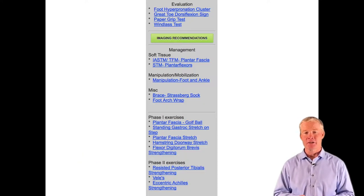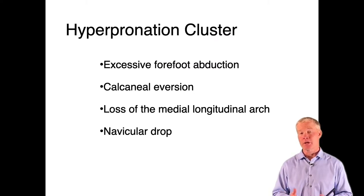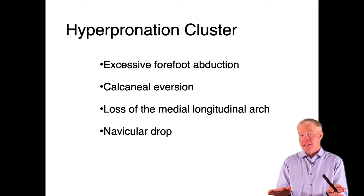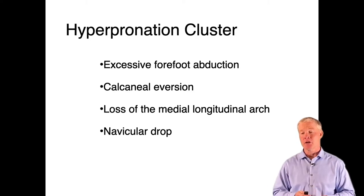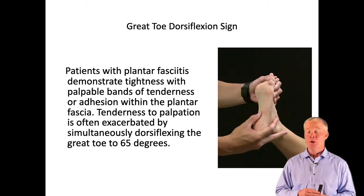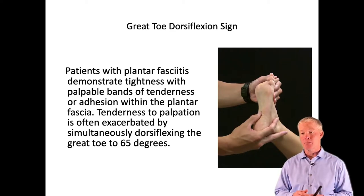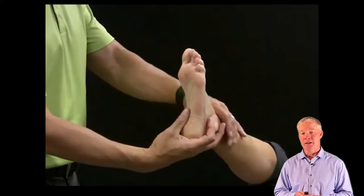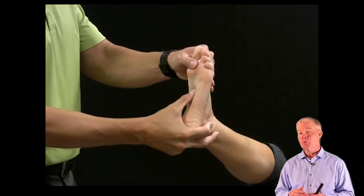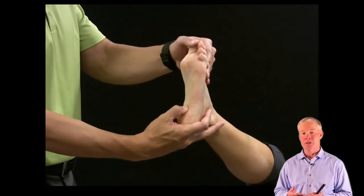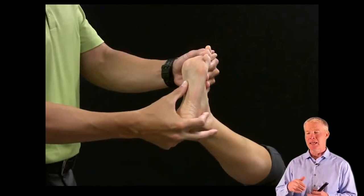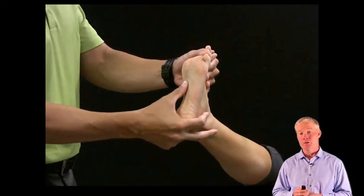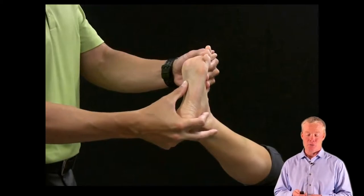To assess the plantar fascia, we use the hyperpronation cluster: standing from behind, we see too many toes, excessive forefoot abduction, a bow in the Achilles tendon, or loss of the medial longitudinal arch. A more specific test is the great toe dorsiflexion sign — palpating the tender area and then repalpating with the great toe in dorsiflexion. This puts an increased stretch on the medial band, making it more prominent and sensitive. The great toe dorsiflexion sign is usually positive in plantar fasciitis.